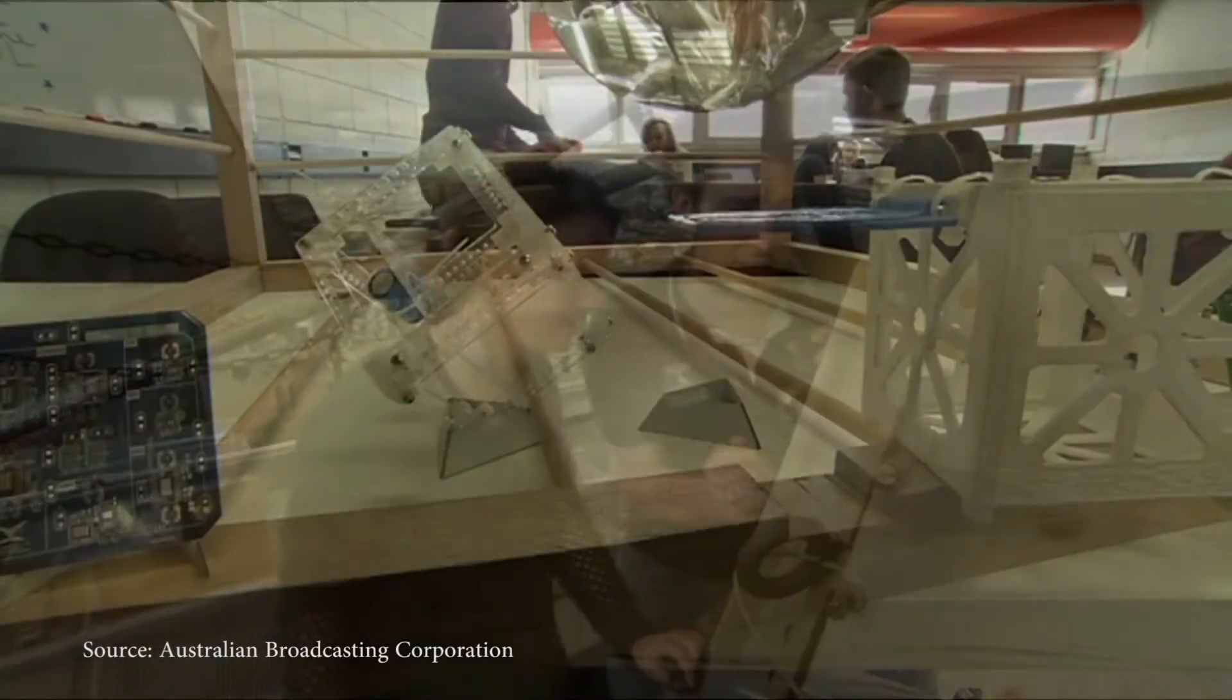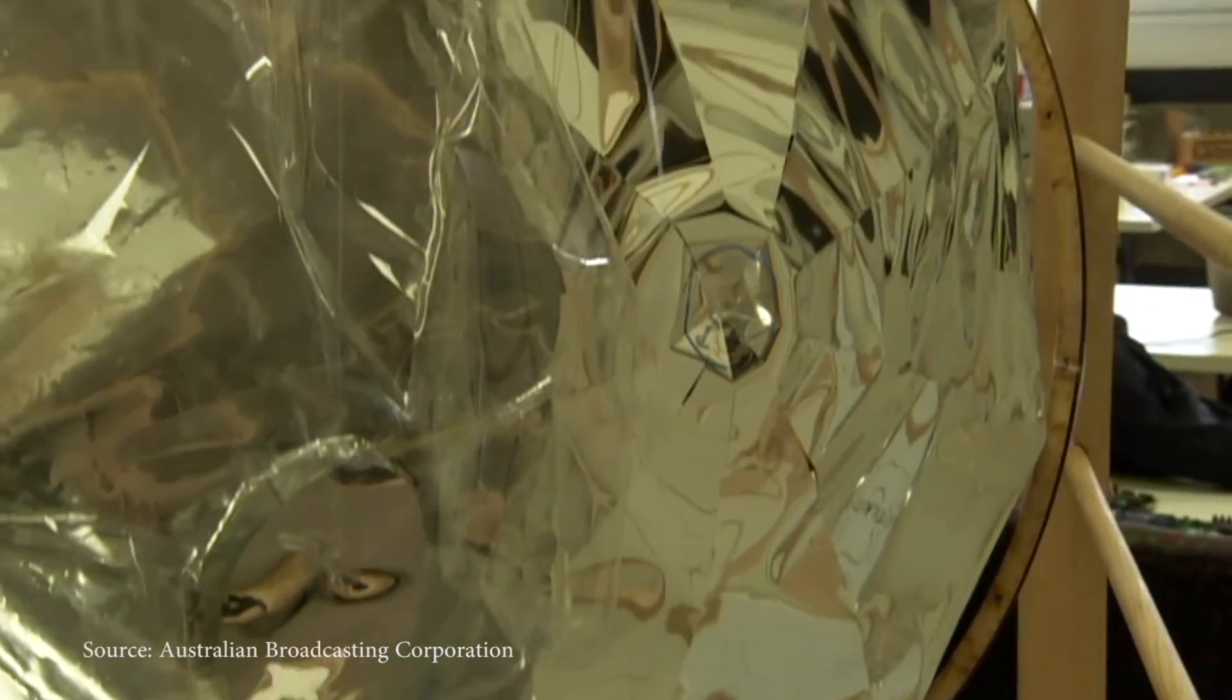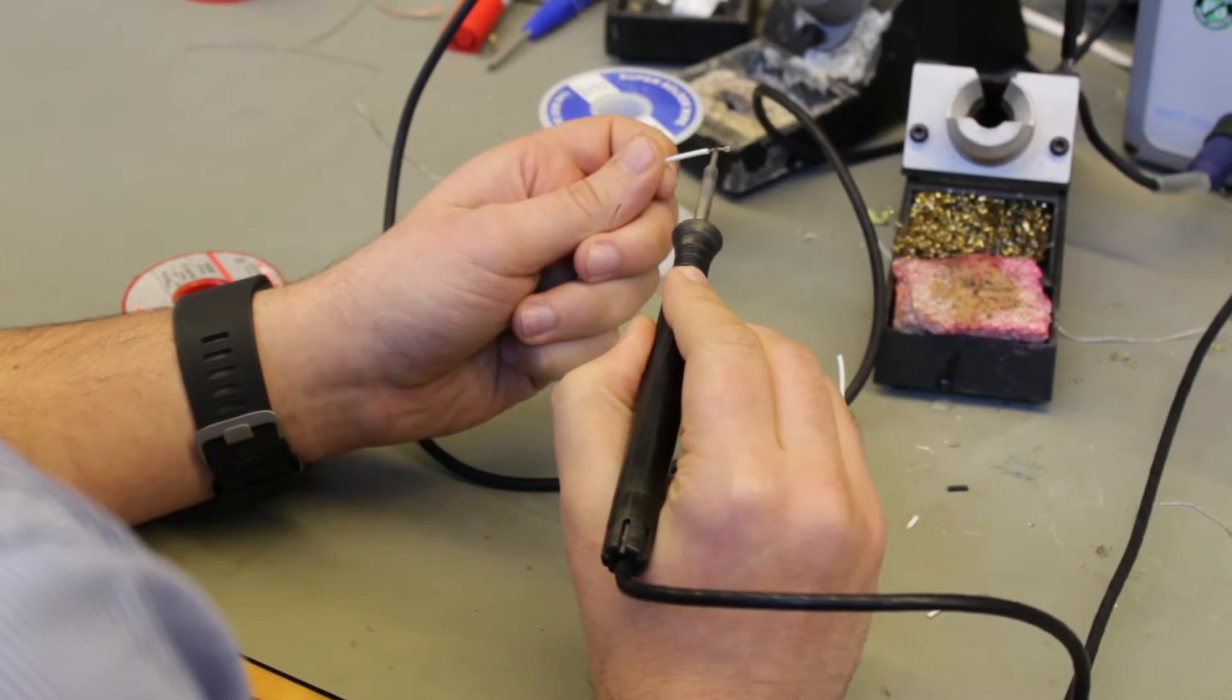This starts with the successful build and launch of our first own nanosatellite, Australia's second student-built satellite. This will be the foundation for us to build more nanosatellites and other future missions.